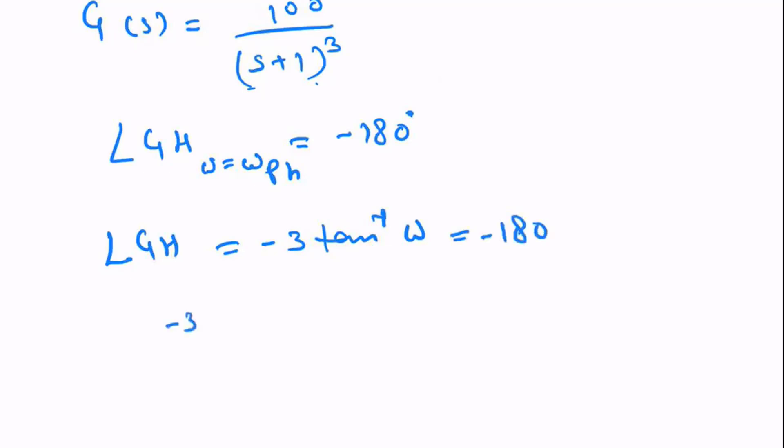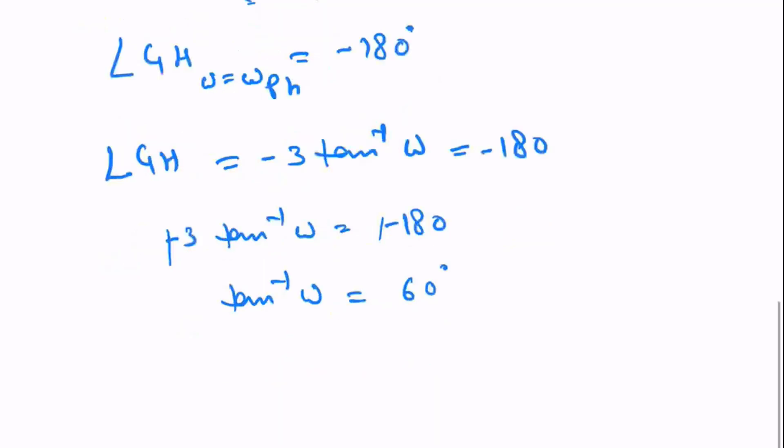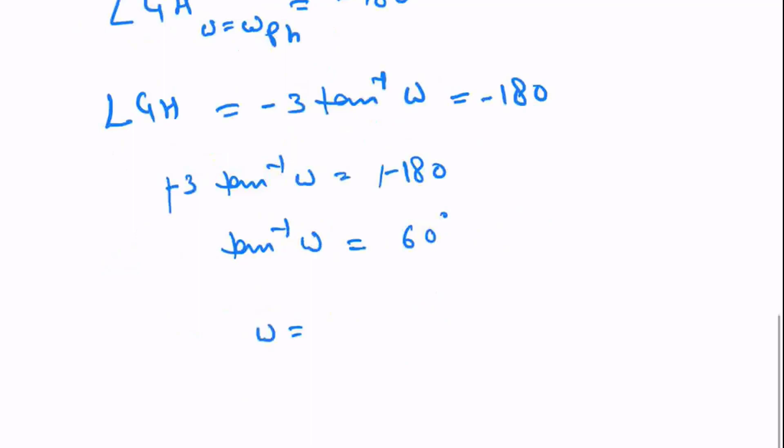So -3tan⁻¹(ω) = -180°. Dividing both sides by -3: tan⁻¹(ω) = 60°, which means ω = √3 radian per second.